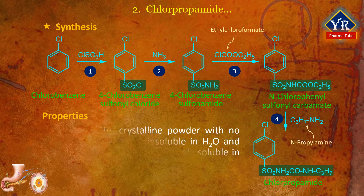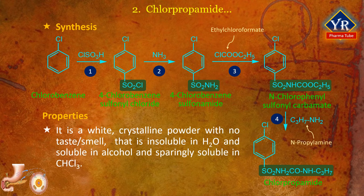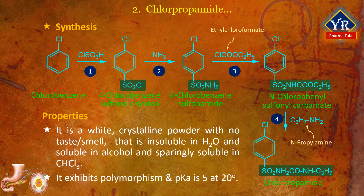Chlorpropamide is a white crystalline powder with no characteristic taste or smell. It is practically insoluble in water, soluble in alcohol, and sparingly soluble in chloroform. It will form water-soluble salts in basic solutions. It exhibits polymorphism. Its acid dissociation constant pKa is 5 at 20 degrees centigrade.